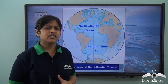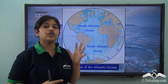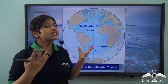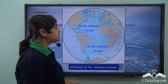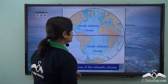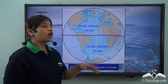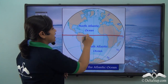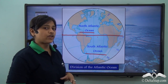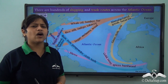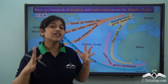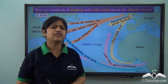Just like the equator divides the Pacific Ocean into the North Pacific Ocean and South Pacific Ocean, similarly it also divides the Atlantic Ocean into the North Atlantic Ocean and South Atlantic Ocean. We must also remember that the Atlantic Ocean is one of the busiest oceans of the world.